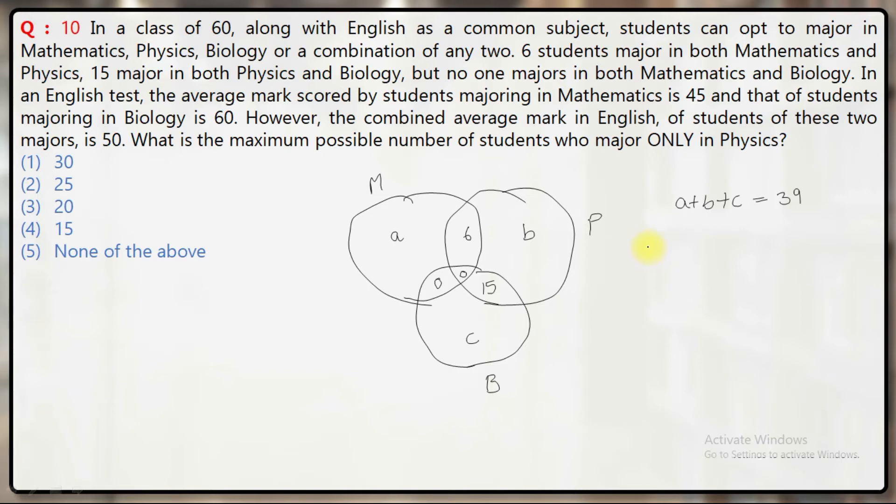What else is given? The average score of students majoring in Mathematics (a plus 6 students) is 45, so (a+6) times 45. Students majoring in Biology (c plus 15) get 60 marks on average, so (c+15) times 60.